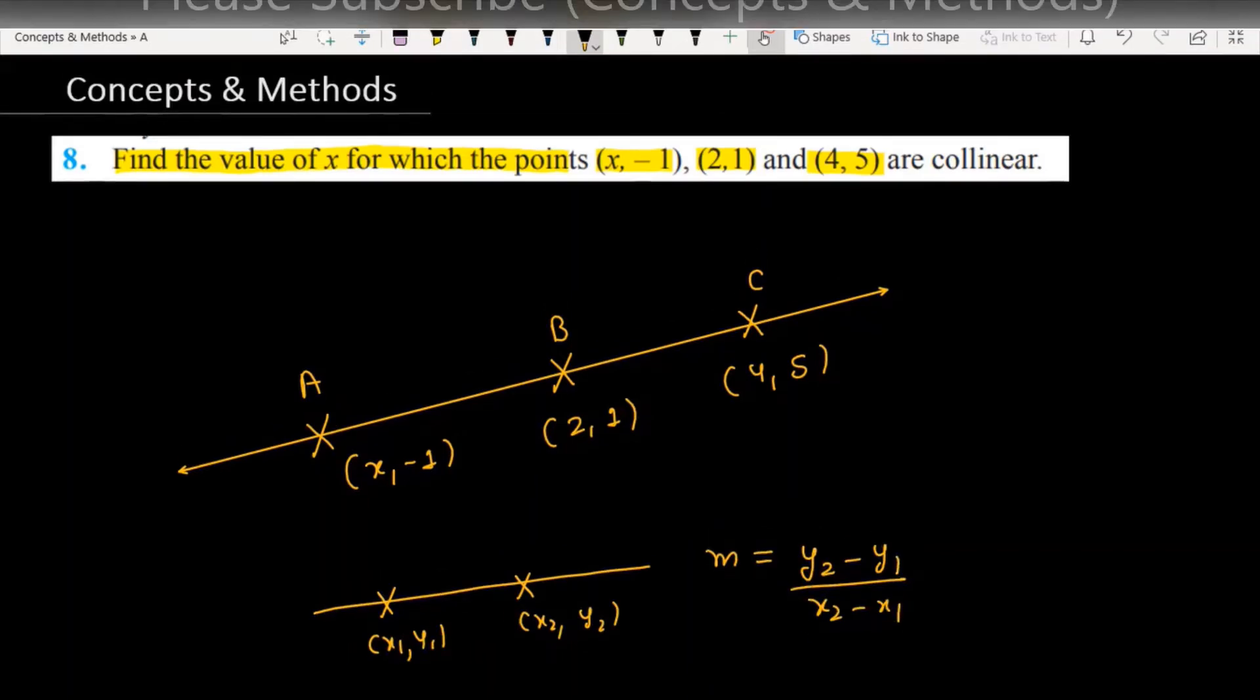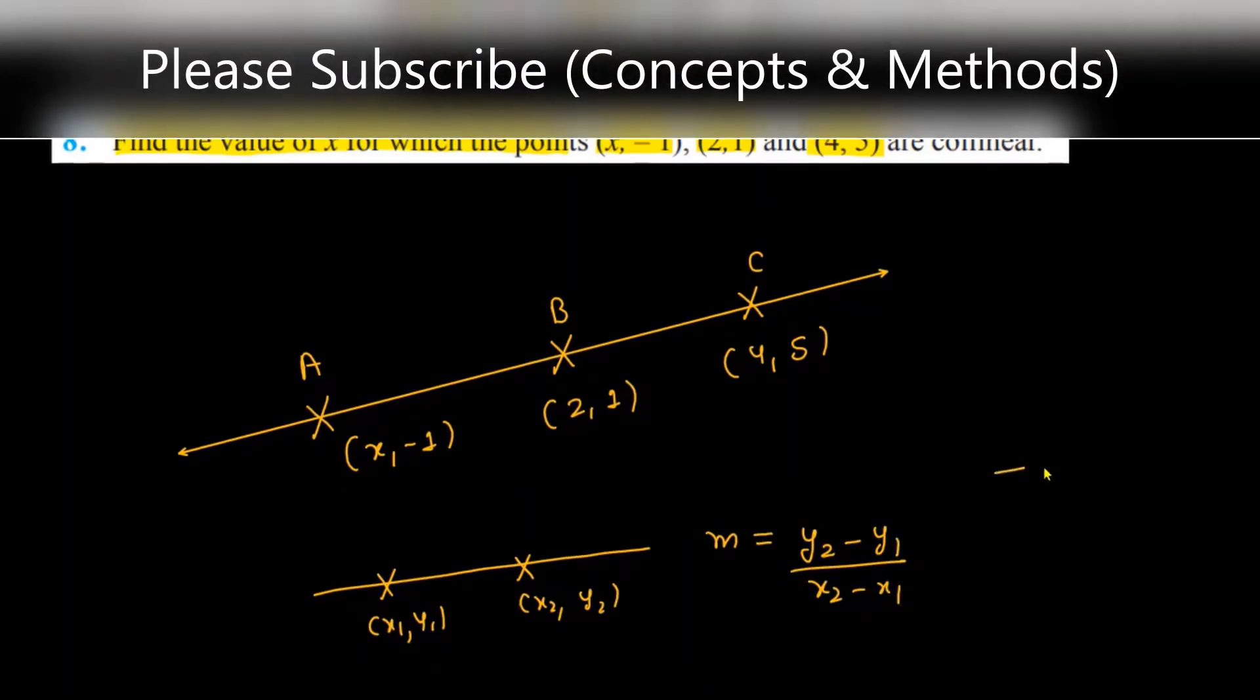In case two lines are parallel or collinear, in both cases the slopes are the same. If you have a line with slope m1 and another line with slope m2, and they are collinear, then m1 is always equal to m2.